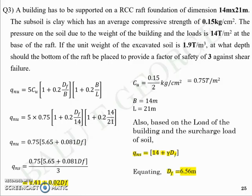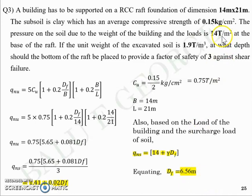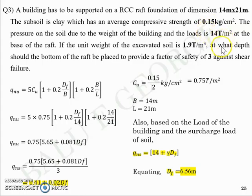In summary, when you place a raft of size 14 by 21 meter in plan at a depth of 6.56 meters in soil with unit weight 1.9 ton/m³, undrained cohesion cu = 0.074 kg/cm², and applied load of 14 ton/m², it will have a factor of safety of 3 against shear failure.